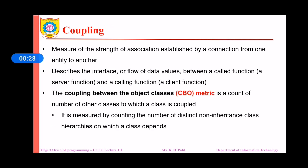Let us first understand what is coupling. Coupling is a measure of strength of association established by a connection from one entity to another entity. In simple words, coupling is the bonding between the entities — the stronger the bonding, the more difficult it is to separate the entities from each other. Coupling describes the interface or flow of data values between a called function and a calling function.